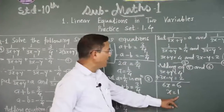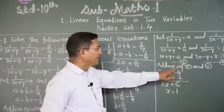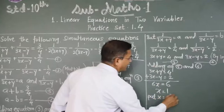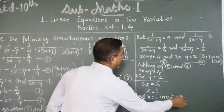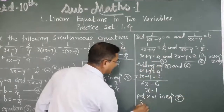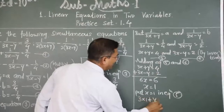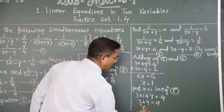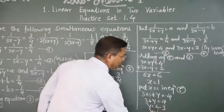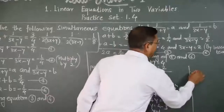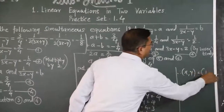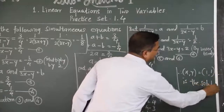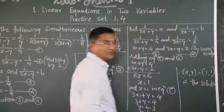Put x equals 1 in equation five: 3 into 1 plus y equals 4. Therefore 3 plus y equals 4, so y equals 4 minus 3, therefore y equals 1. Therefore the solution is x comma y equals 1 comma 1.